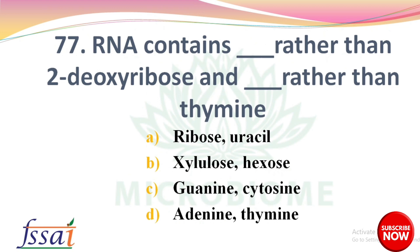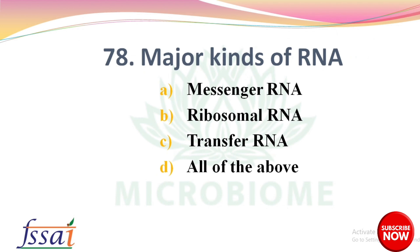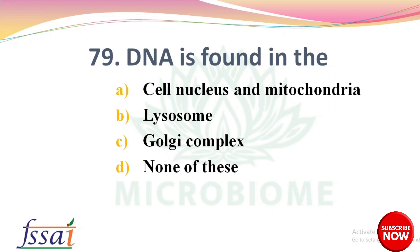RNA contains ribose rather than deoxyribose, and uracil rather than thymine — options: ribose/uracil, silose/hexose, guanine/cytosine, adenine/thymine. The right answer: option A, ribose and uracil. Next: major kinds of RNA — options: messenger RNA, ribosomal RNA, transfer RNA, all of the above. The right answer: all of the above.